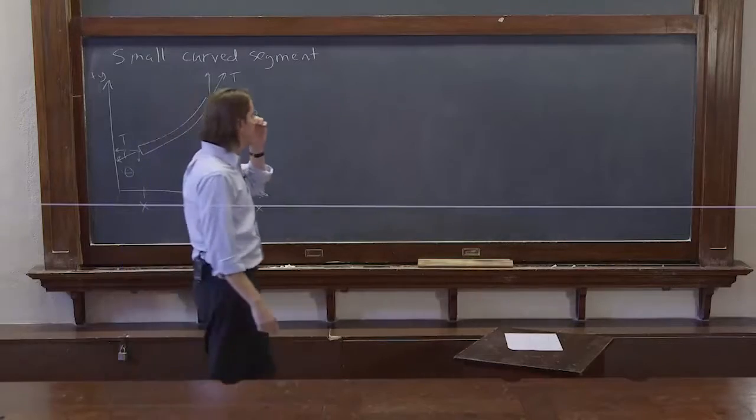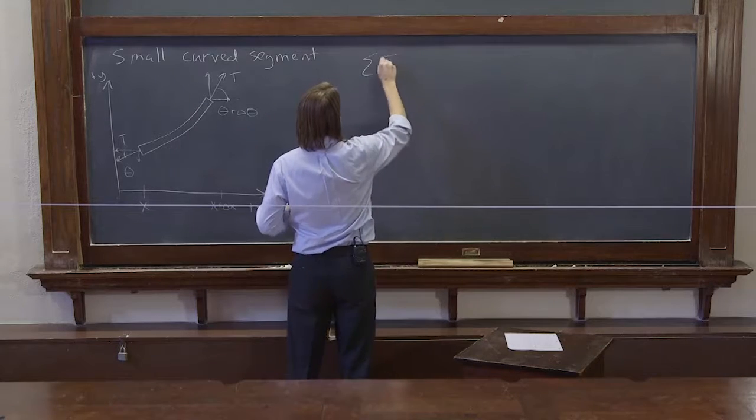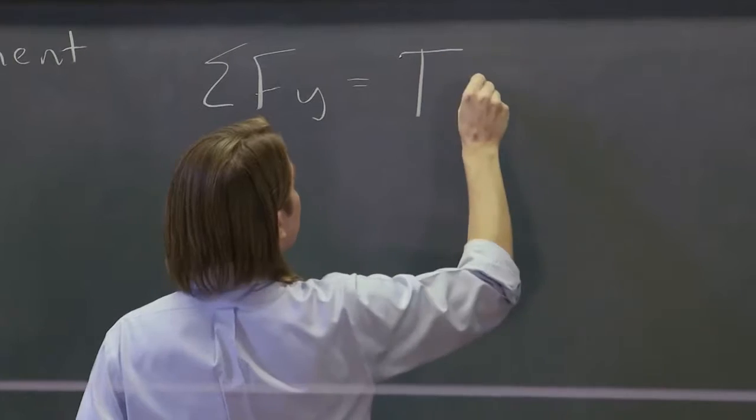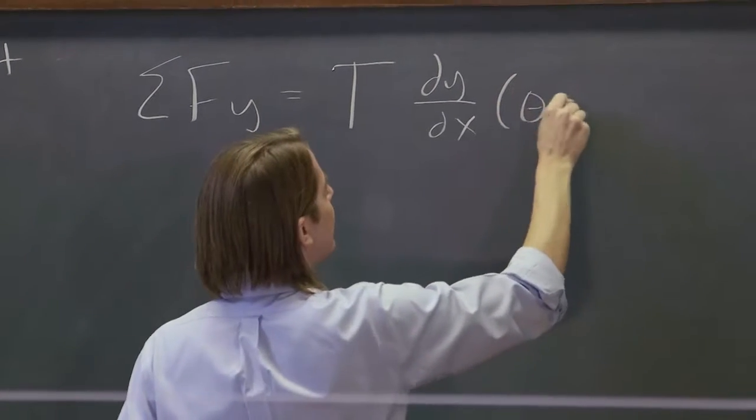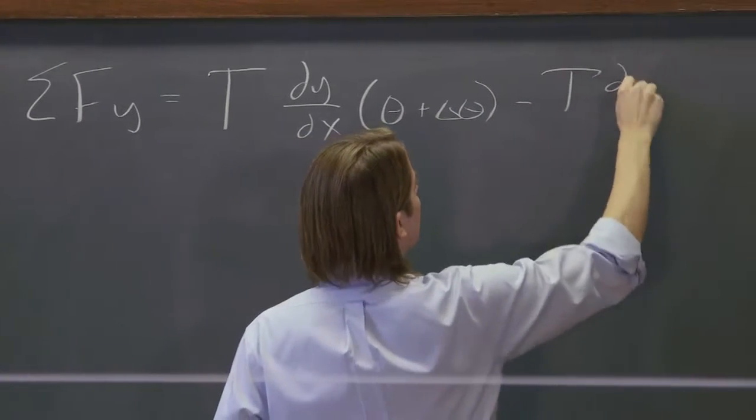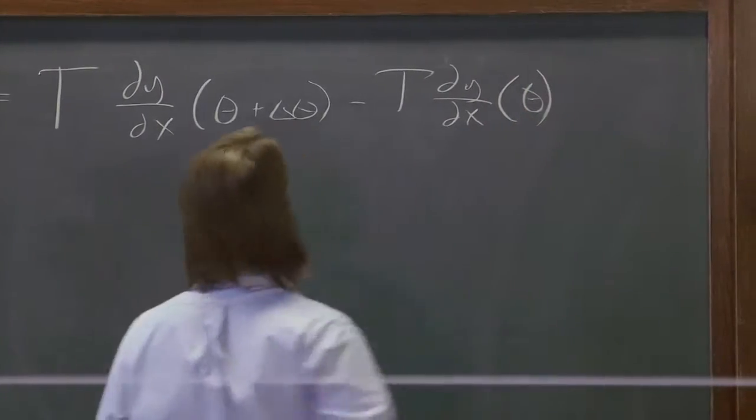Let's keep looking at this. The y force, the sum of the forces in the y, equals the tension. And now we're going to call it dy/dx at the point theta plus delta theta minus the tension dy/dx, essentially the slope, at the point theta.